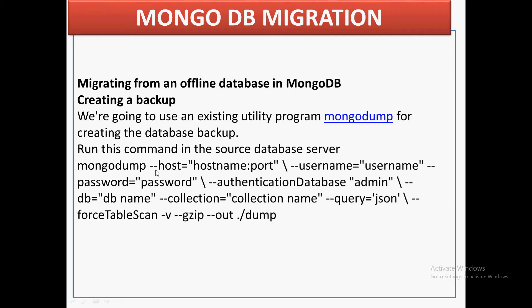The MongoDump command requires you to provide the host from where you want to do the dump, the username and password, the authentication database, and the database name. If you want to go to the collection level, you just need to mention the collection name. Finally, you specify the output format — whether it is JSON or BSON — and whether you want compression. All those options can be provided with MongoDump.